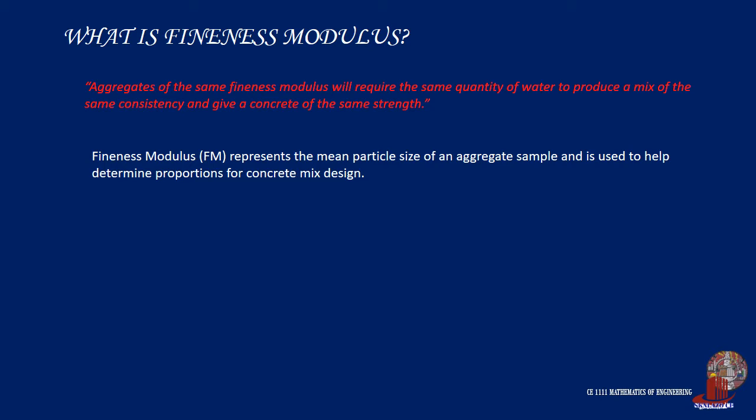If two aggregate samples fall under the same modulus, they will require the same amount of water to produce a mix of the same consistency and concrete of the same strength. Fineness modulus is calculated as the summation of the cumulative percent retained, divided by 100.